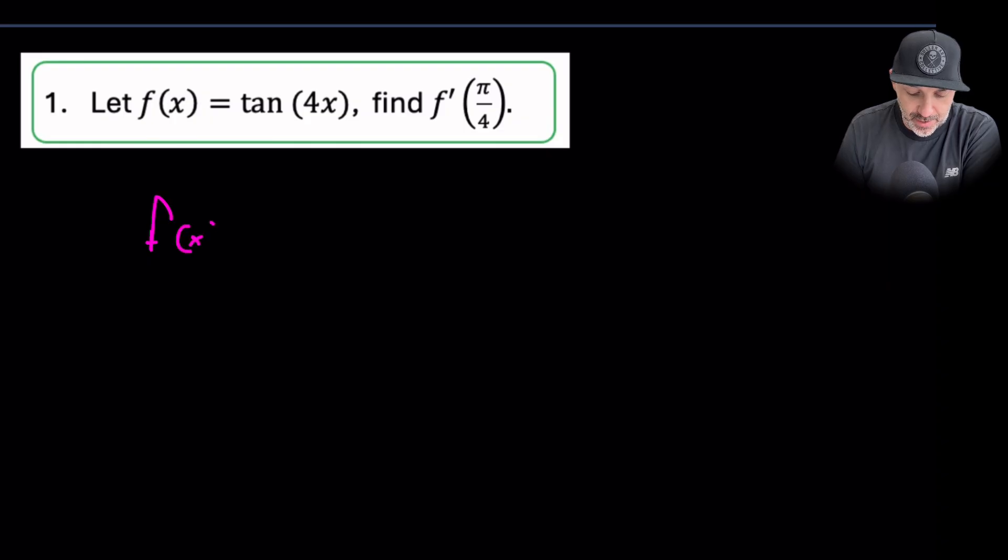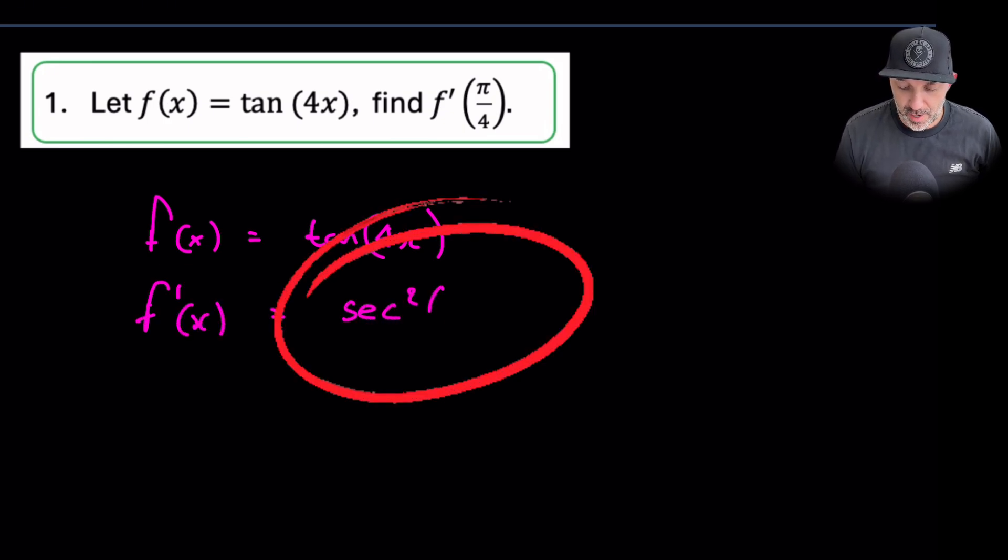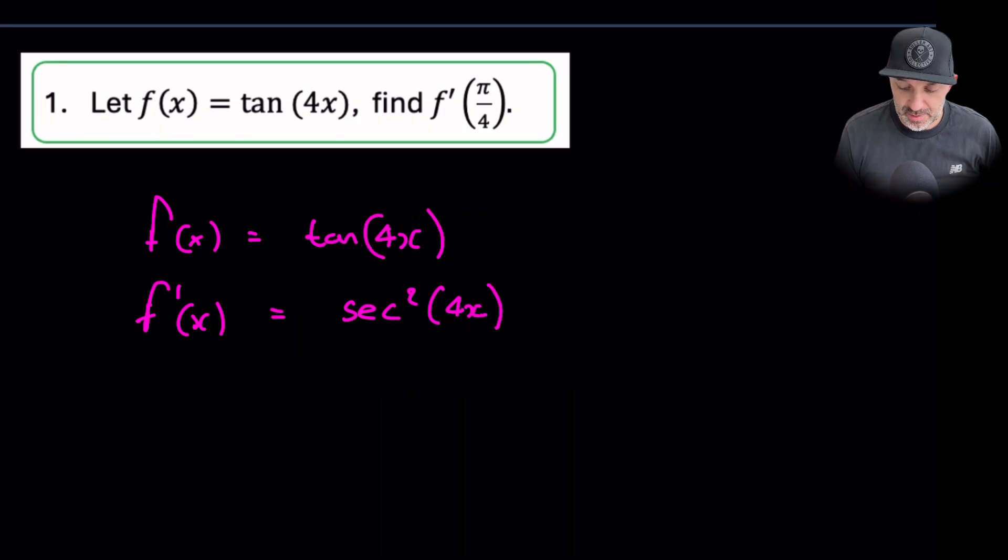So first of all then, if f of x is equal to tan 4x, we know instantly that the derivative of this is secant, which is sec squared. And then what we do is we leave that function of x the same inside there.